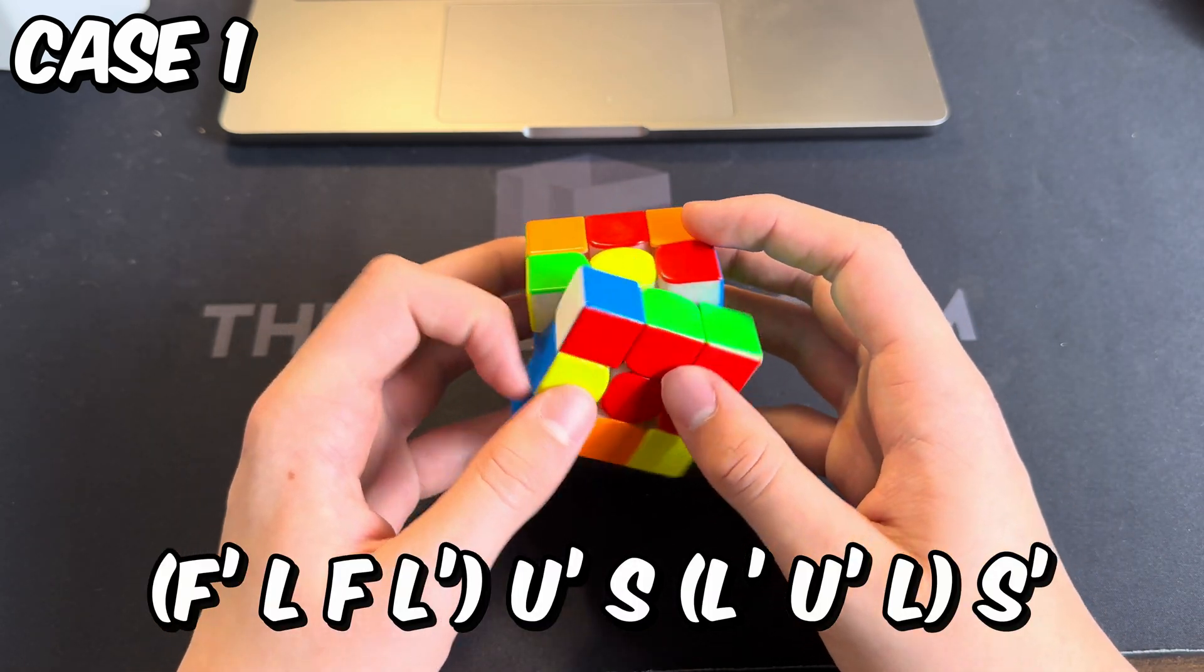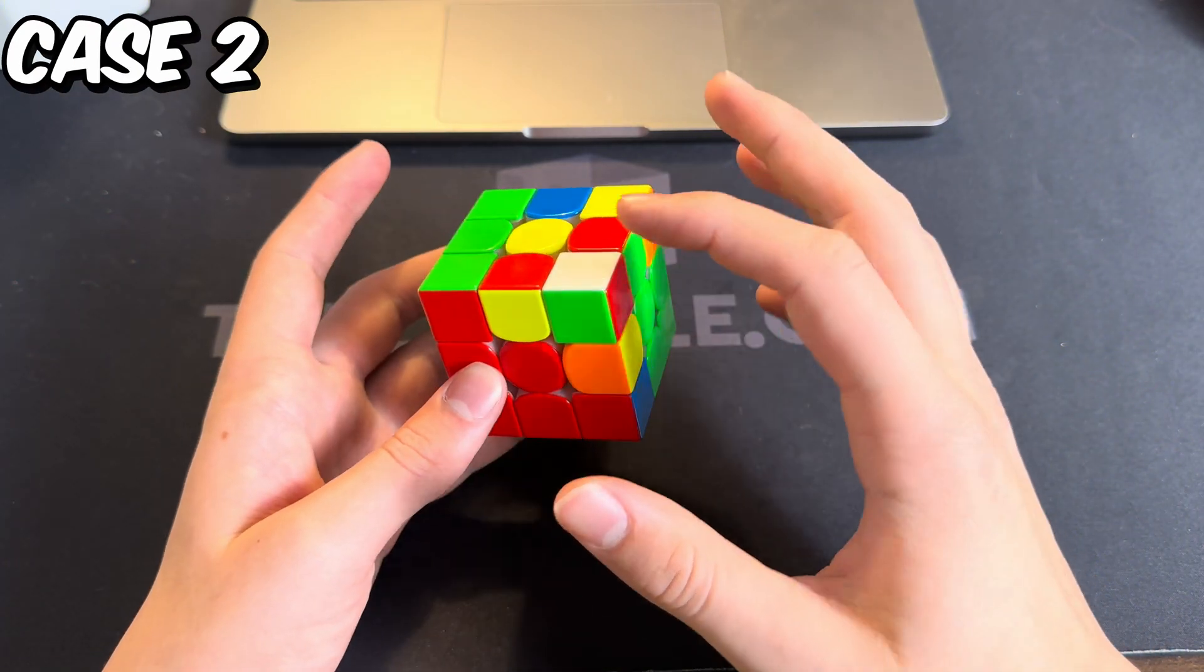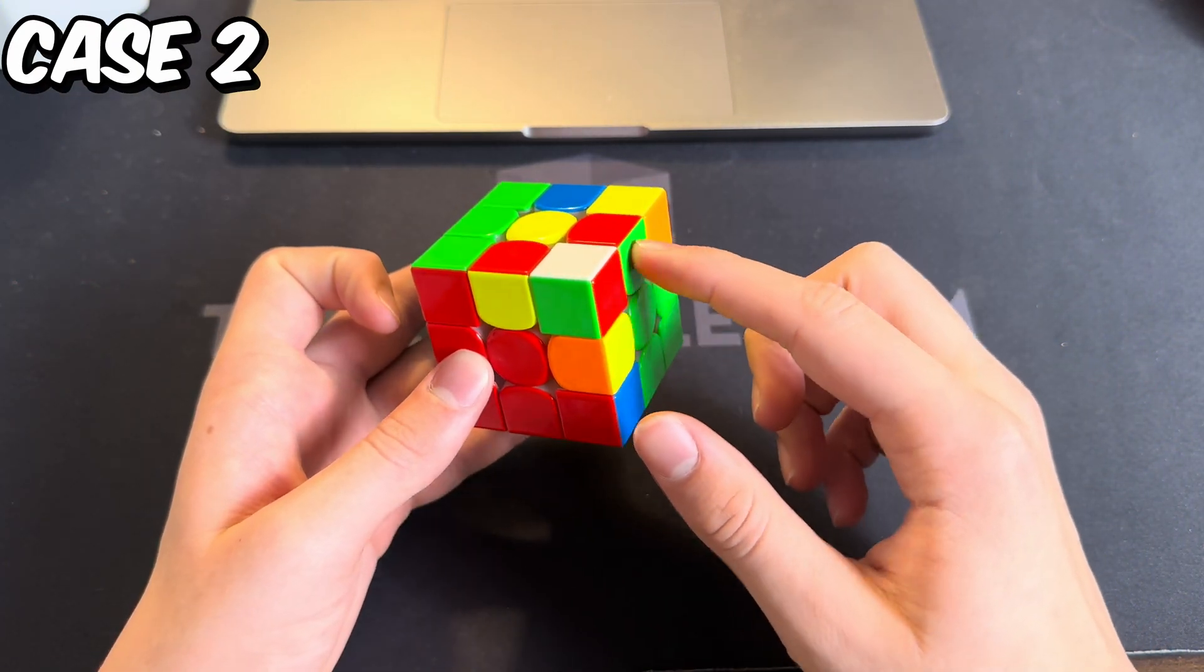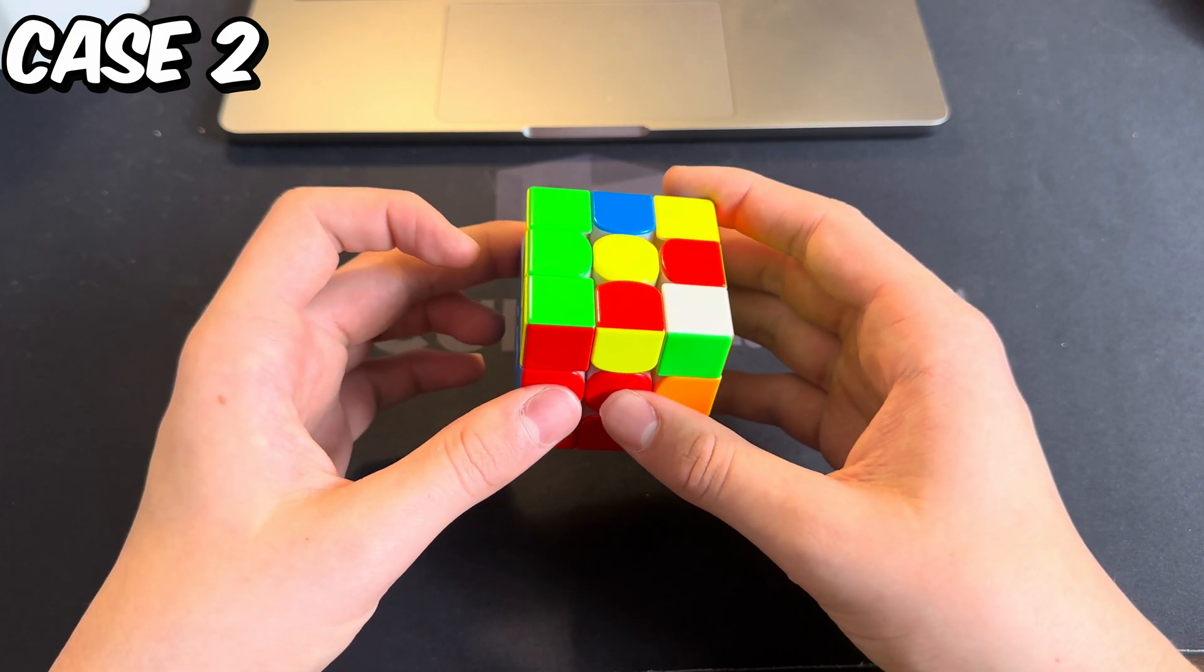For example, this algorithm would just go something like this. This next case is like the last one where there's white on top, but this time the pieces aren't matching. The algorithm goes like this.